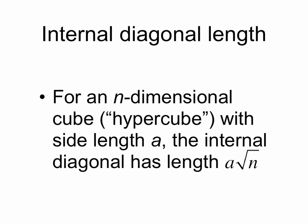Now this generalizes to higher dimensions. A two dimensional cube is also known as a square, a three dimensional cube is a cube, four dimensions and higher is known as a hypercube. So for an n dimensional cube or hypercube with side length a, the internal diagonal has length of a times the square root of n.